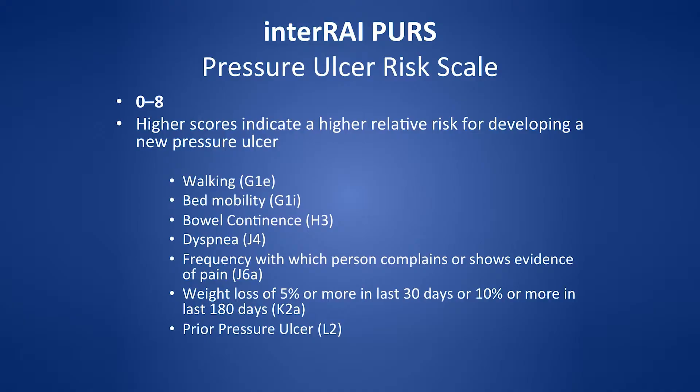The pressure ulcer risk scale includes items like walking, bed mobility, and bowel incontinence. The score is zero to eight. I think a really important item in the interRAI is weight loss of 5% in the last 30 days or 10% in the last 180 days. This indicator really needs to be up front somewhere — it's a really important indicator for both nutrition and skin.